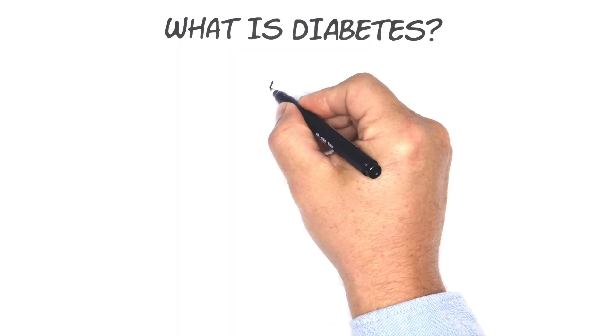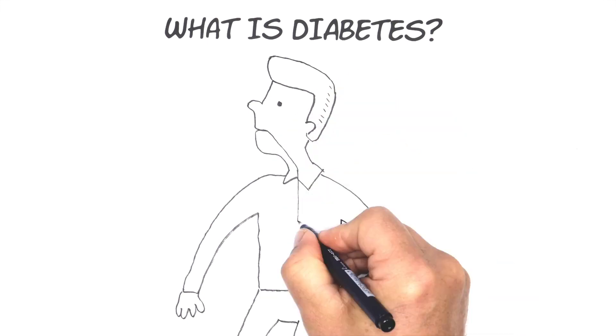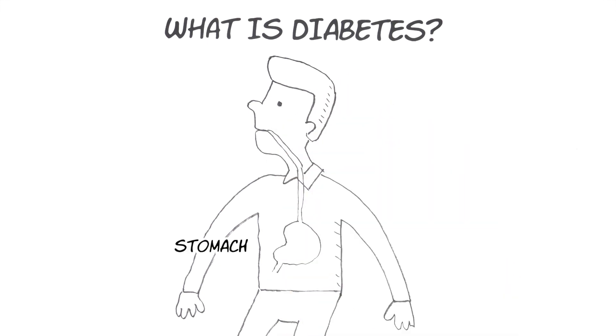What is diabetes? Diabetes is a disease characterized by an inability of the body to regulate blood sugar levels.